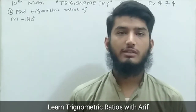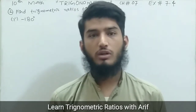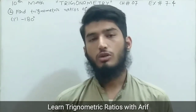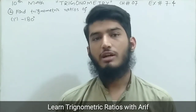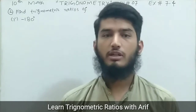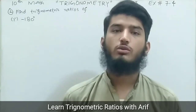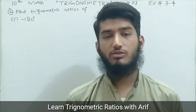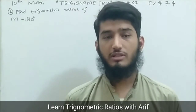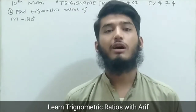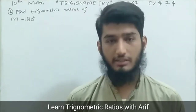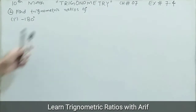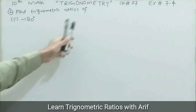Question number one is about identifying which quadrant a given angle lies in. In today's video I am starting with question number two, related to the trigonometric ratios of a given angle. We will find the six trigonometric ratios: sine, cosecant, cosine, secant, tangent, and cotangent.